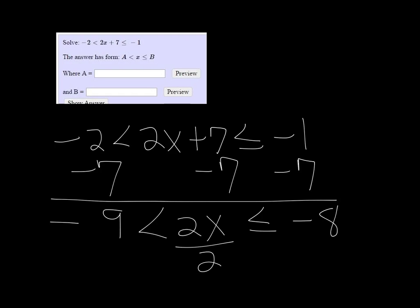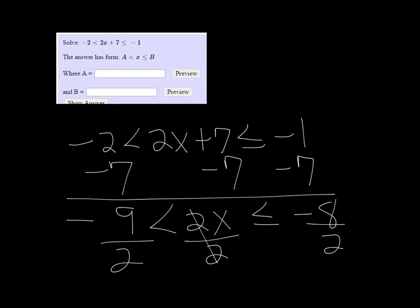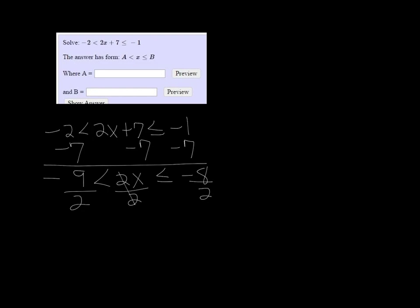Then we'll divide by 2 to get x by itself, and we have to do that to the ends as well. So we get that x is between negative 9 halves and negative 4. So a, in this case, would be negative 9 halves, and b would be negative 4.